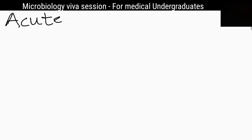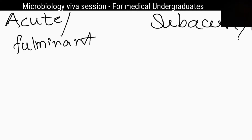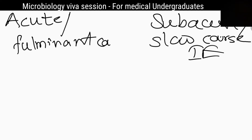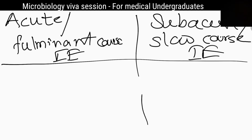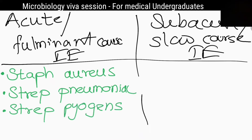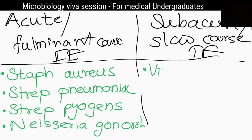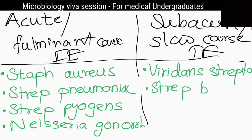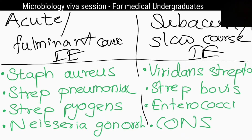What are the causative agents for acute (fulminant) and subacute (slow) infective endocarditis? Causative agents for fulminant infective endocarditis are Staphylococcus aureus, Streptococcus pneumoniae, Streptococcus pyogenes, and Neisseria gonorrhoeae. Causative agents for slow infective endocarditis are Viridans streptococci, Streptococcus bovis, Enterococci species, coagulase-negative staphylococci, and the HACEK group of organisms.